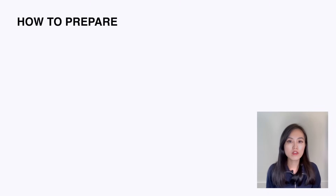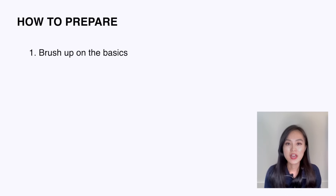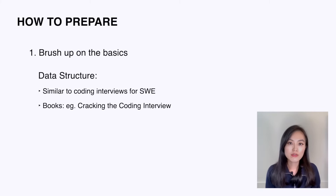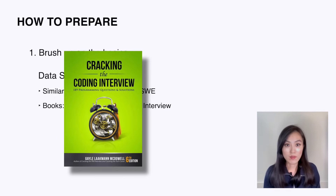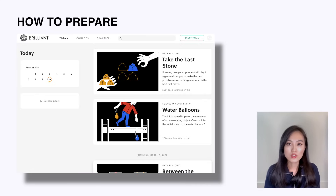Now that you've learned the different kinds of coding questions, let's talk about how to prepare. The first and most important step is to brush up on the basics. For data structures, this type is very similar to coding interviews for software engineers, so you could use the go-to book: Cracking the Coding Interview. For mathematics and statistics, you could use Khan Academy or Brilliant.org. For machine learning, I recommend two books: An Introduction to Statistical Learning and The Elements of Statistical Learning — you only need one of them.